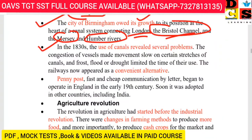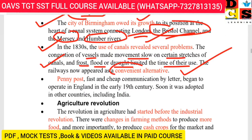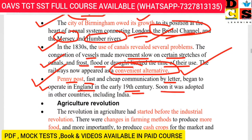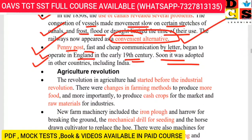By 1830, the use of canals had created several problems. The congestion of vessels made movement slow on certain stretches. Frost, flood, drought, and other factors further disrupted canal transport. Railways therefore became convenient alternatives. The Penny Post, which provided cheap communication by letter, began to operate in England in the early 19th century and was soon adopted in other countries as well.